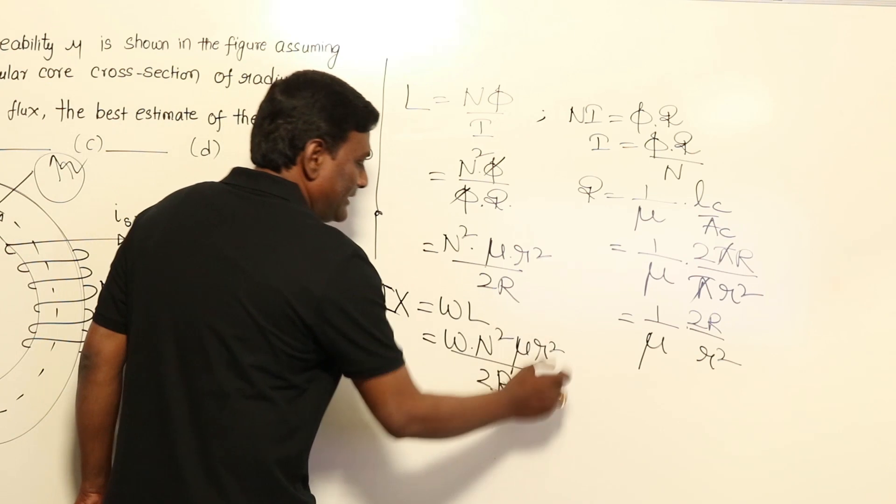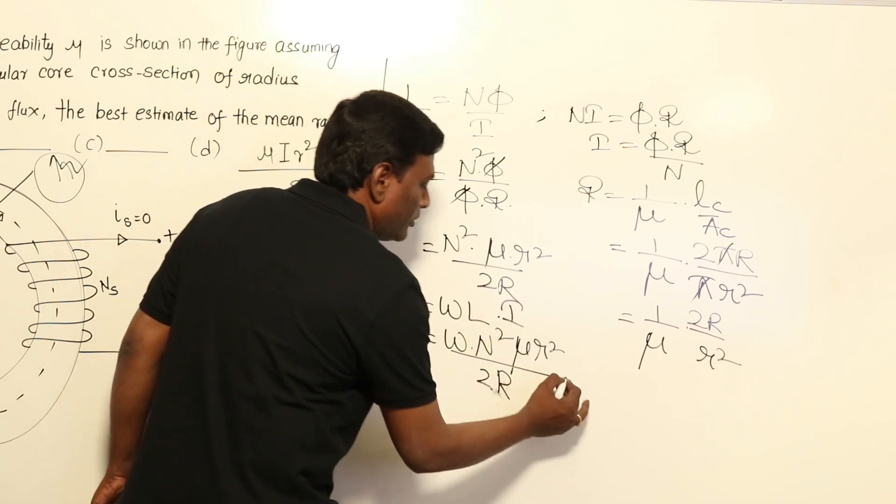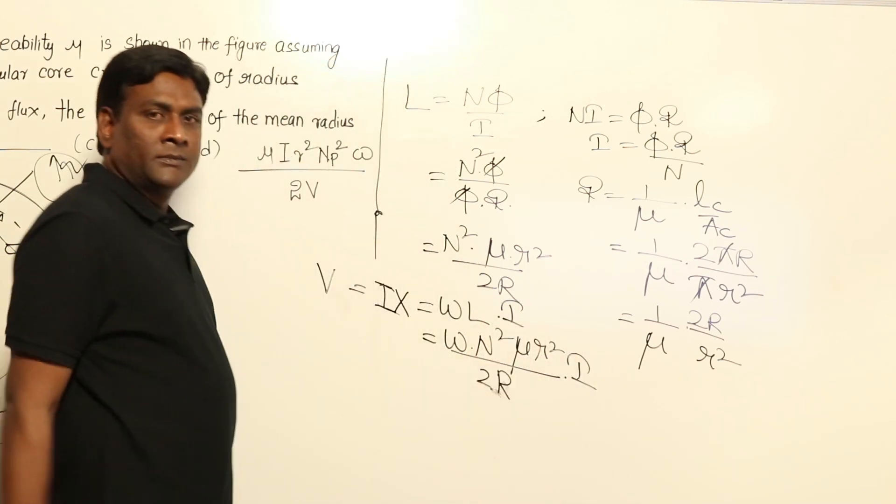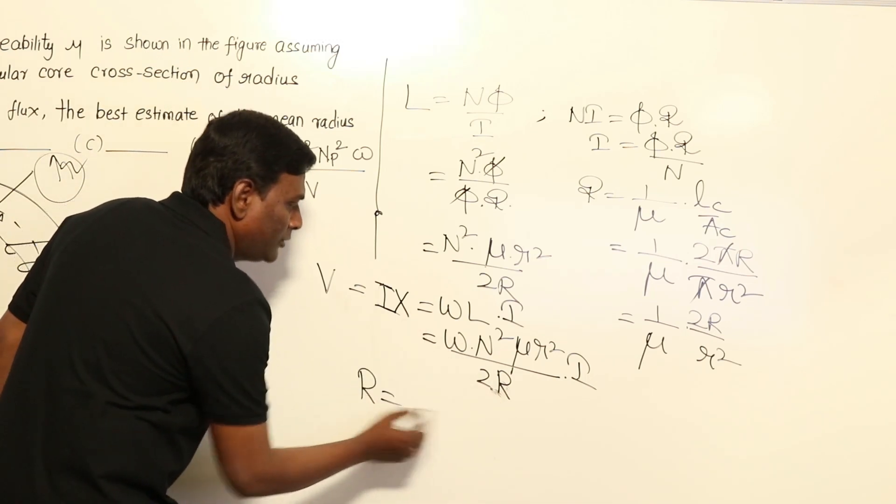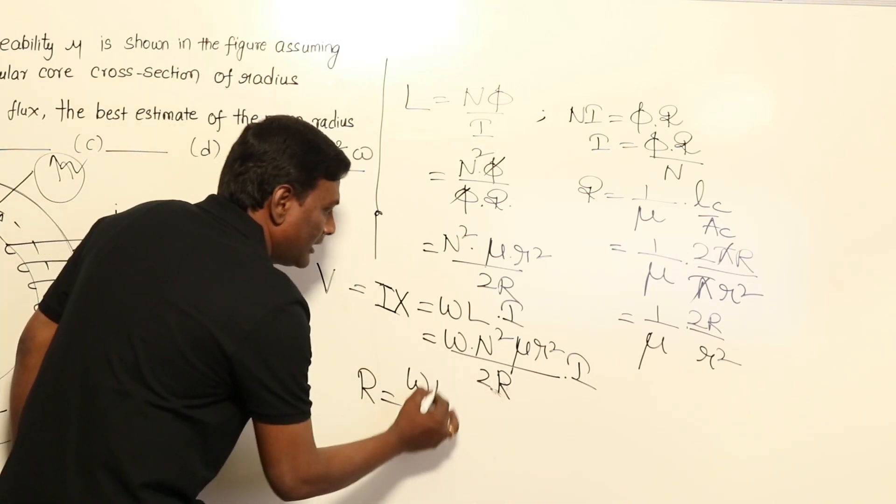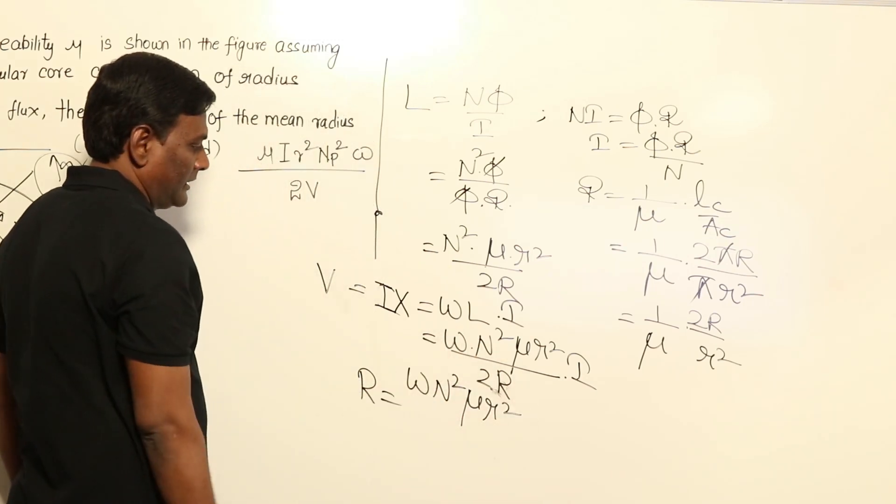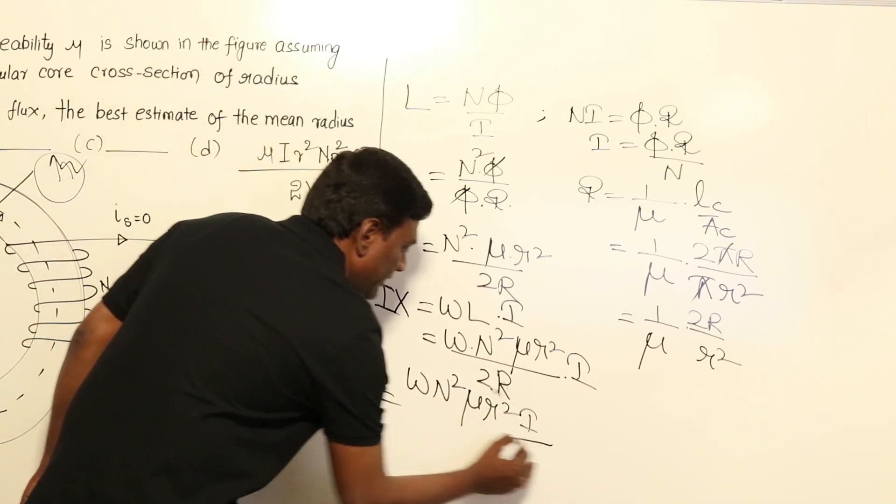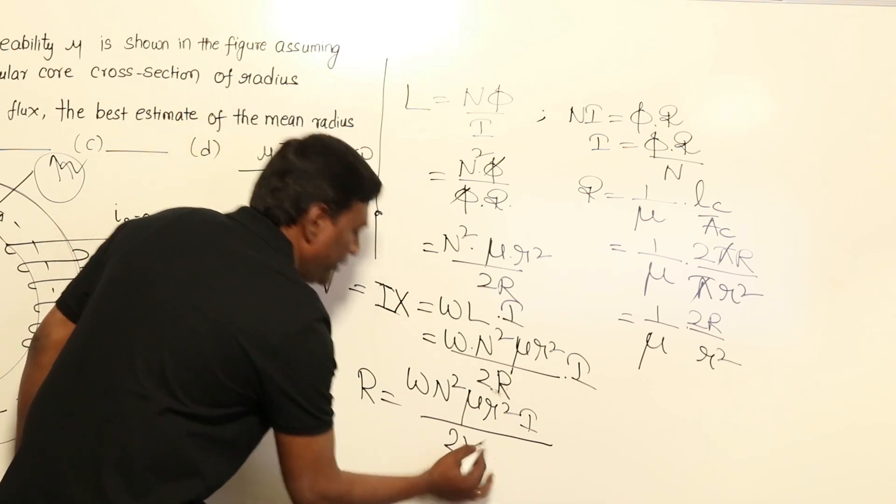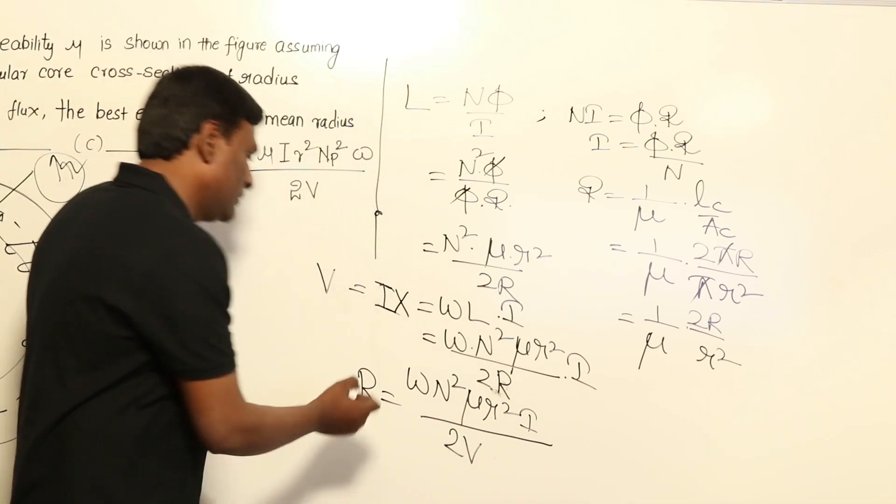So voltage V = reactance × i. Therefore R_m is going to be ω × N² × μ × r² × i / (2V). That's it, we got the answer!